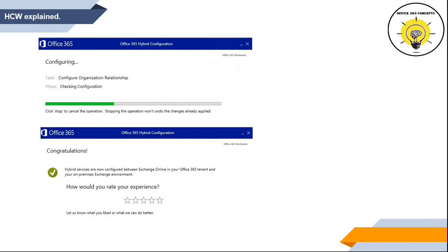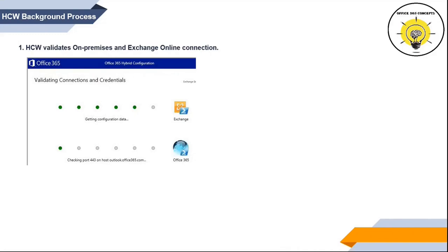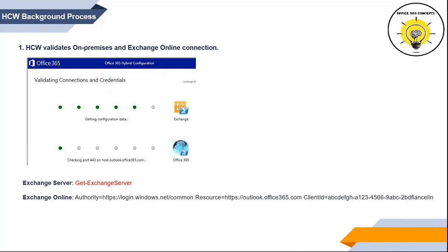Now let's understand what happens in the backend when you run HCW or Hybrid Configuration Wizard. The first step of HCW is it validates if it is possible to connect with Exchange and Exchange Online. To validate this, HCW runs the get-ExchangeServer command on-premise and then it tries to connect to Exchange Online to authorize the connection.